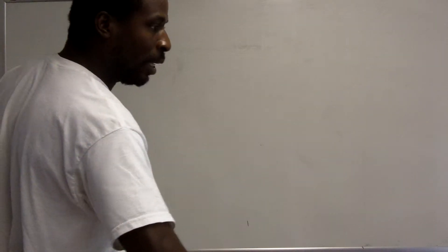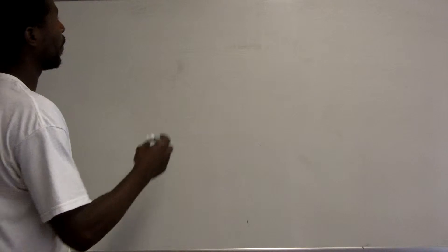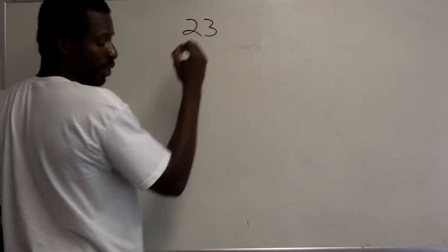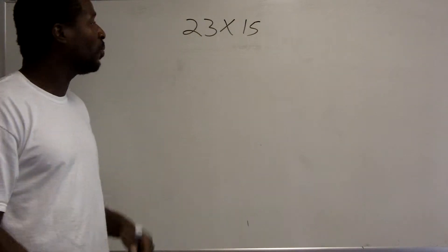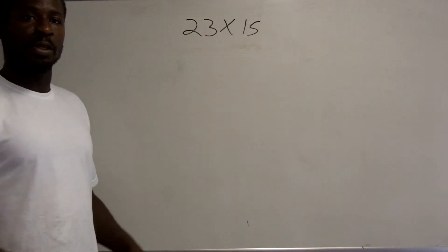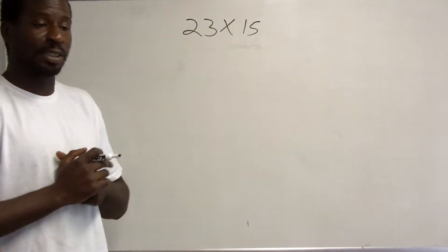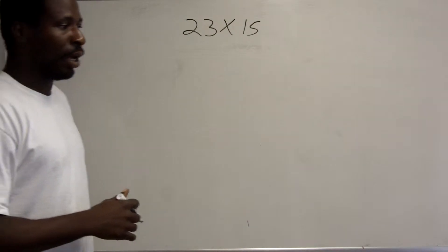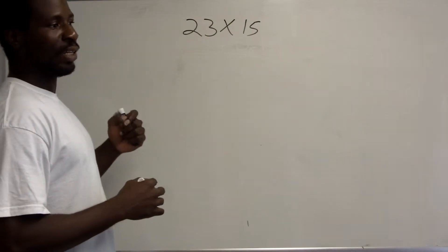Now we'll discuss an early computation method called duplication and mediation. Duplication refers to doubling a number and mediation refers to taking half of a number. Suppose we wanted to multiply 23 by 15. We're exploring computational history — this is what people in the past used in order to multiply.